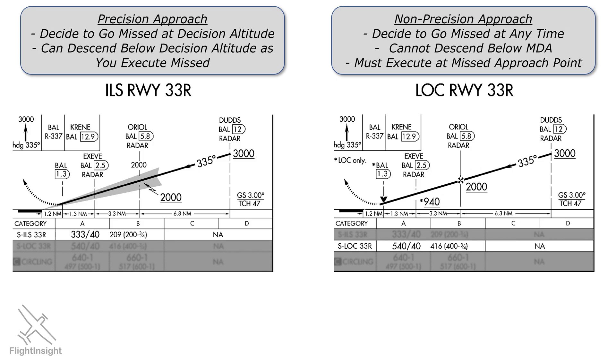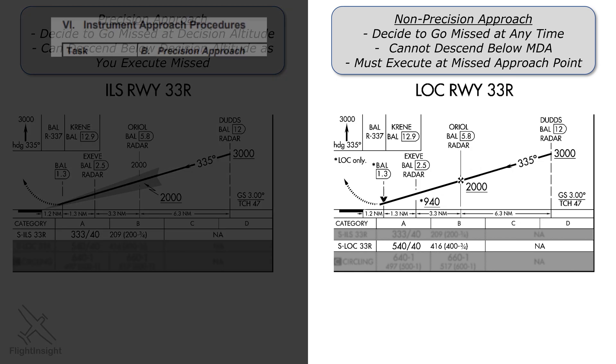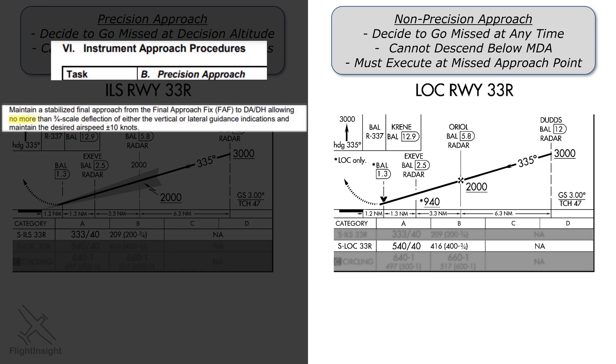Let's end with a reading from the instrument ACS, which is the playbook for how your check ride will be evaluated. For the precision approach, you need to maintain no more than a three-quarter scale deflection of the vertical and lateral guidance. So as long as you're on the needles, you're okay, no mention of minimum altitudes.